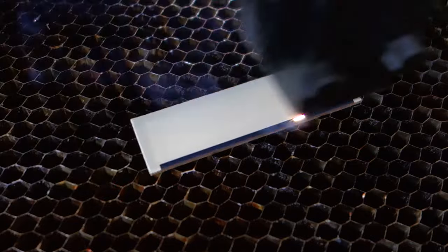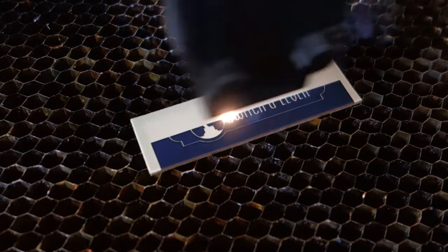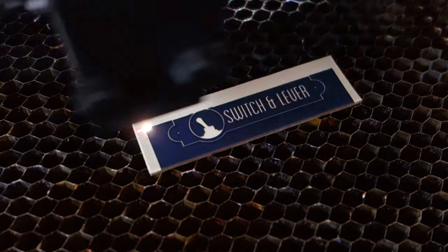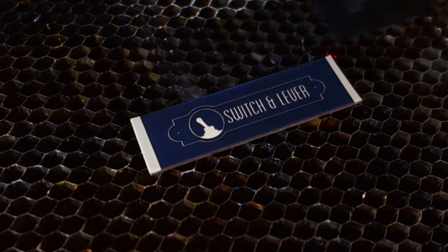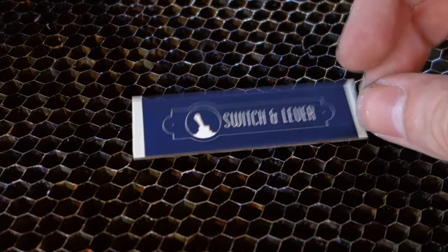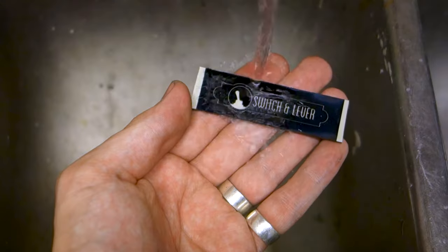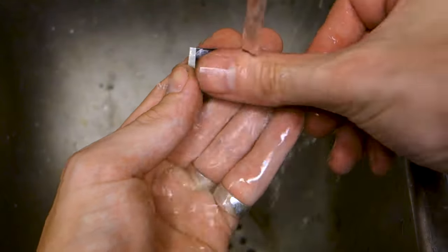Spray paint your brass like before, and once the paint has dried, laser your design onto the paint. As before, make the black areas where you don't want the etching to happen. Once it's done, you can simply wash off the leftover paint with warm water.